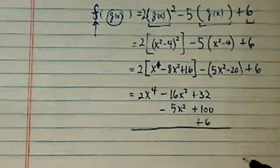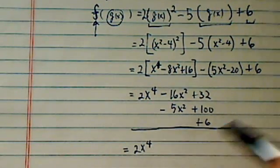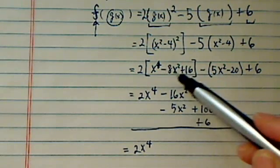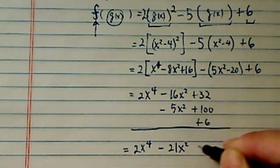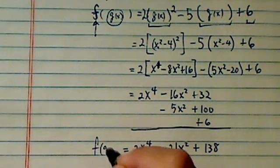The reason I'm not writing them on the same line is because I know I'm going to be simplifying it. 16, 32, everything looks good so far. Keep checking your work. This is 2x⁴ - 21x² + 138. That's f(g(x)).